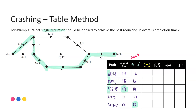Now looking at activity C — any path with C present, I subtract 2. No C in the first path, remains at 17. No C in the second path, stays at 18. There is a C in the third path, so 19 minus 2 brings it down to 17. No C in the fourth path, stays at 14. There is a C in the fifth path, so 15 minus 2 gives me 13. Looking for our largest value — 18 — so if I reduce C, comparing to the original critical path, I could save 1.